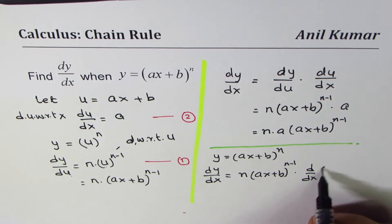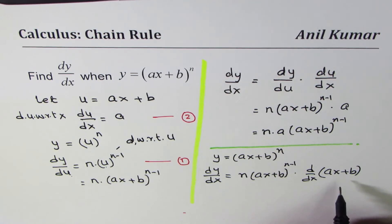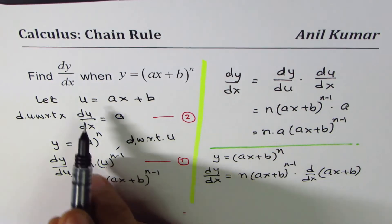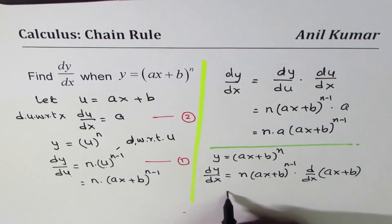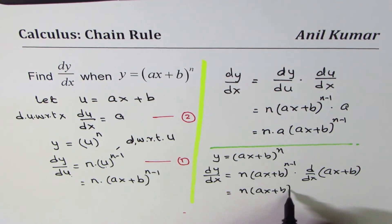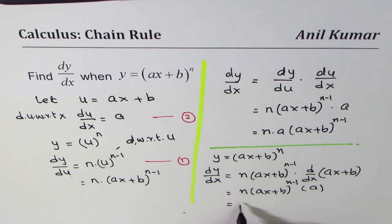So d/dx of ax plus b. Now, this is another form of chain rule where we are not doing substitution, but we can write this inside function and differentiate it. So that gives us n times ax plus b to the power of n minus 1 and derivative of ax plus b is a. And that gives us the same result, n times a times ax plus b to the power of n minus 1.